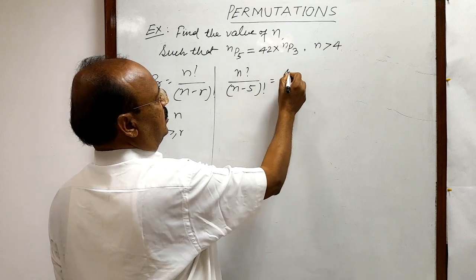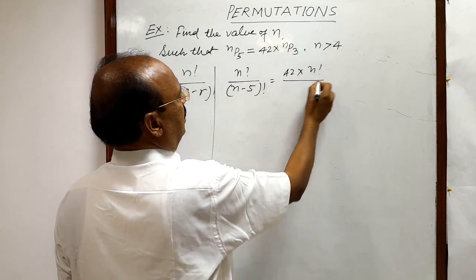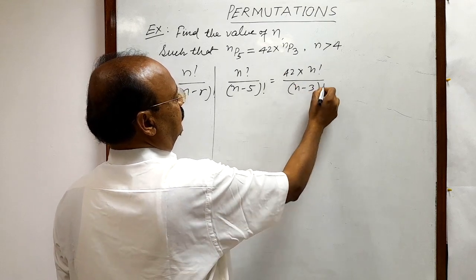And in the right hand side, this is 42 into Np3 is N factorial by N minus 3 factorial.